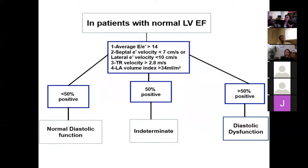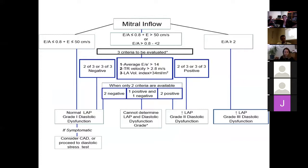In practice, if the LA looks moderately to severely dilated on the four-chamber view — almost approaching the size of the LV — you can include that criterion even without a measured number. Conceptually, diastolic dysfunction is impaired LV relaxation. In grade one (mild), there are no raised filling pressures — by definition normal left atrial pressure. As diastolic dysfunction progresses, backward pressure raises left atrial pressure.